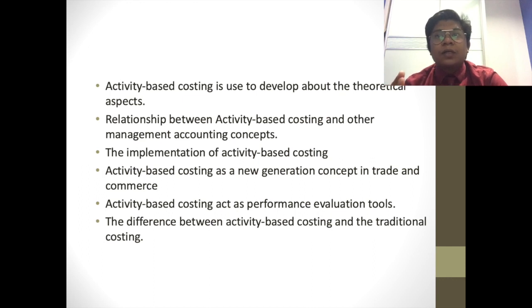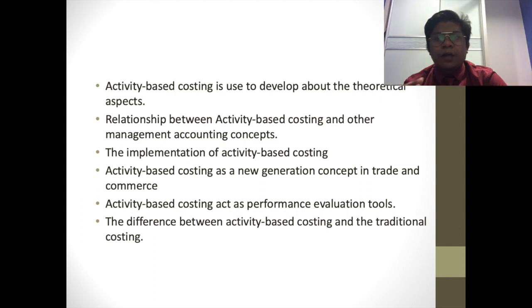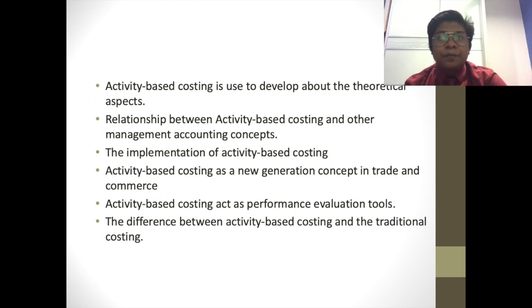Therefore, this journal is the right platform to show any company that wants to change their style of costing. This journal also gives various information about the relationship between ABC and other management accounting concepts, such as Activity-Based Budgeting or ABB, the Theory of Constraints or TOC, supply chain costing, total quality management, and more. With knowledge of this relationship between ABC and management accounting concepts, it will be easier for a company to make the decision to change to ABC-based costing from traditional-based costing.